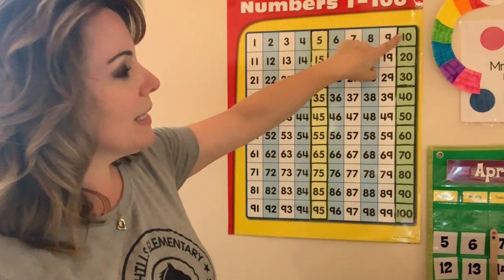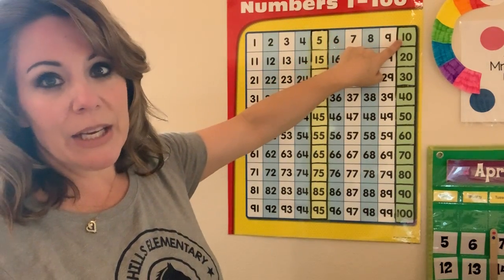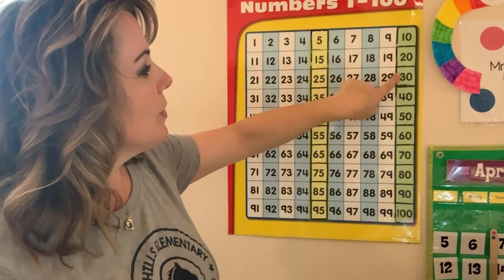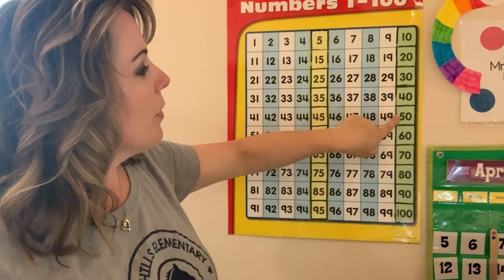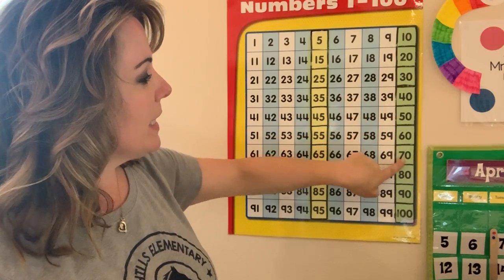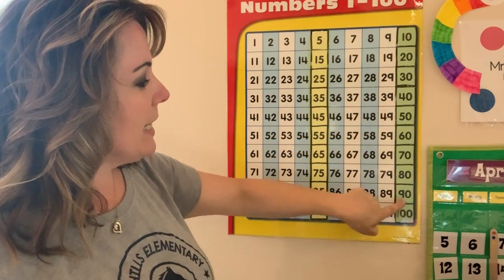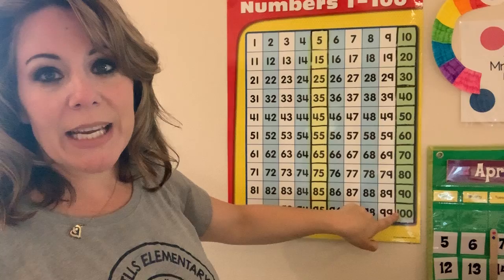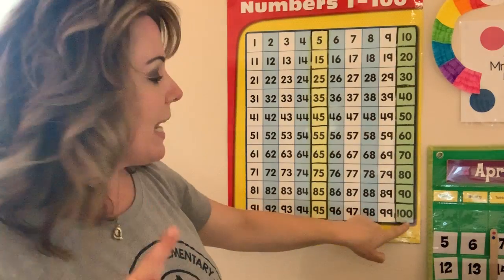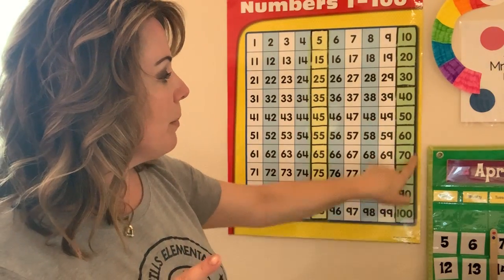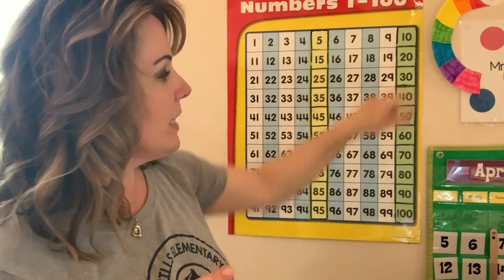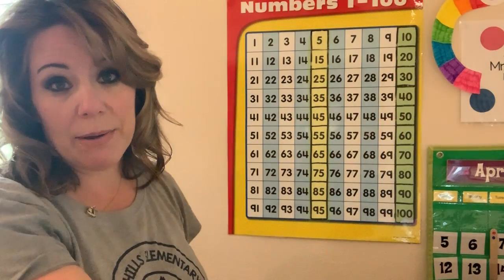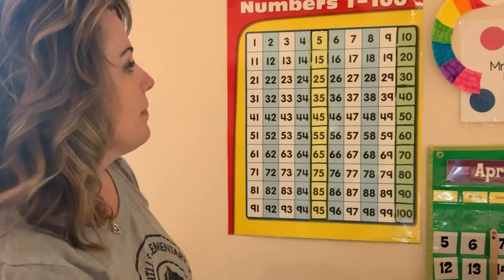We have the same thing here. We have one, two, three, four, five, six, seven, eight, nine, ten. Those first numbers change, but that ending number — that ending digit will always be a zero when we're counting by tens.